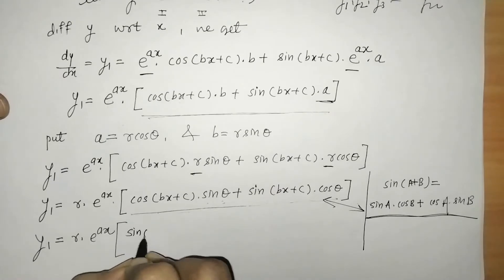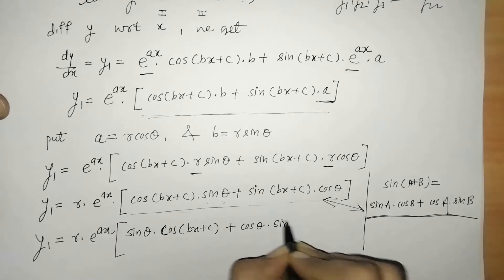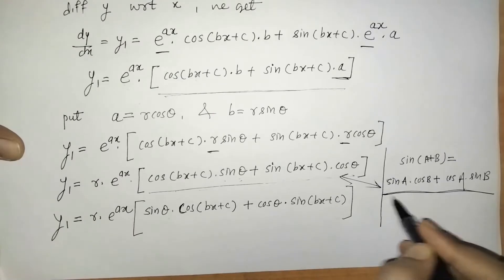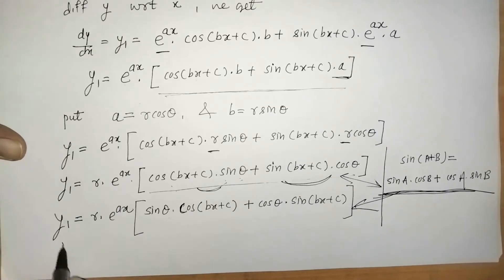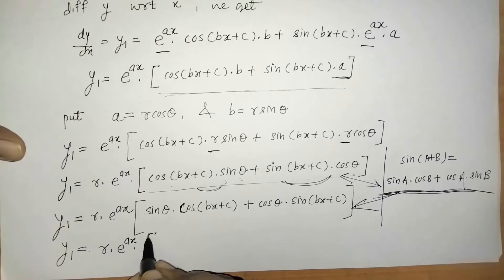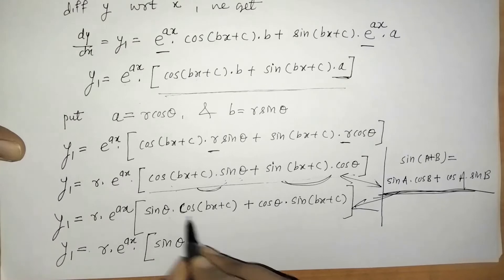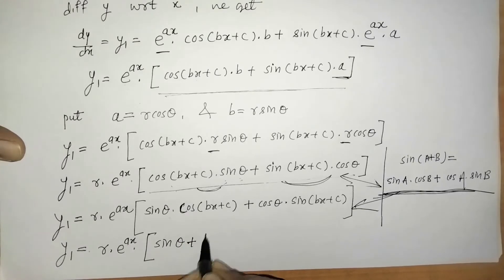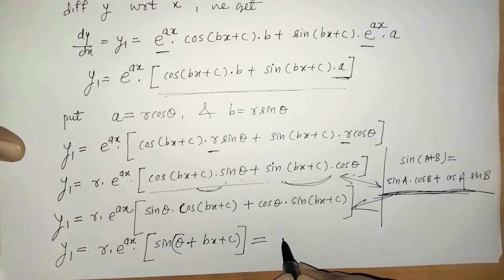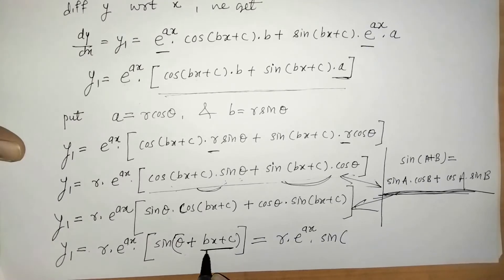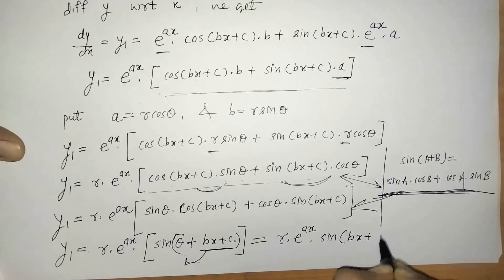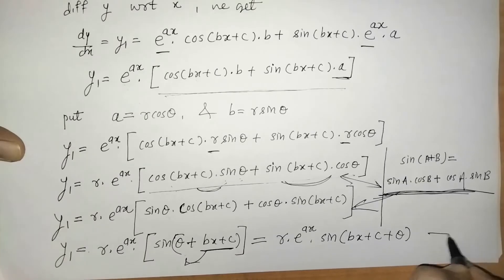Here we have sin θ. We arrange these terms to get a similar expansion, shifting terms to match the sin(A+B) form. So y1 equals r into e raised to ax into sin(bx + c + θ), by comparing the expansions. So we got the first derivative.